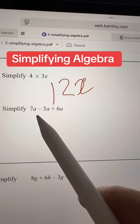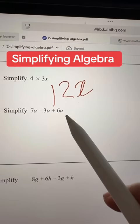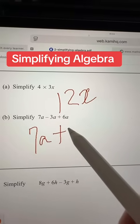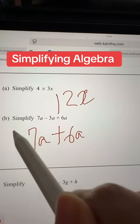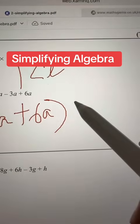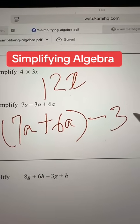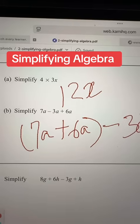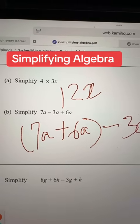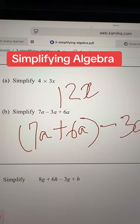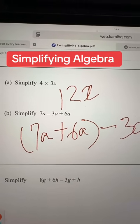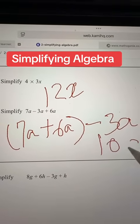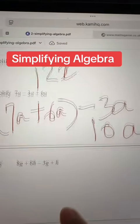Then you have 7a minus 3a plus 6a. When you have something like this, get all the adding ones together and put the minus one on the side. So 7 plus 6 is 8, 9, 10, 11, 12, 13. 13 minus 3a is 10a.